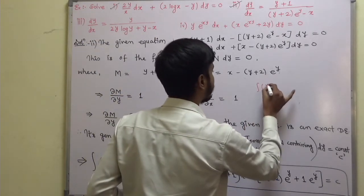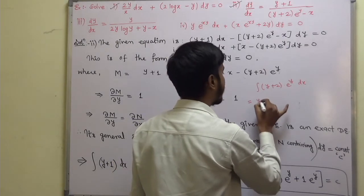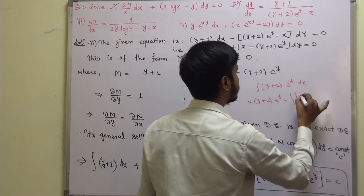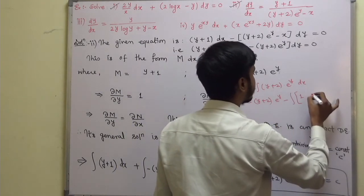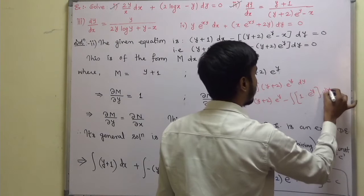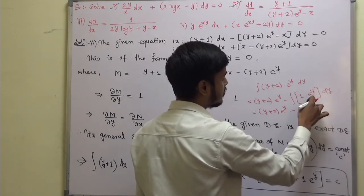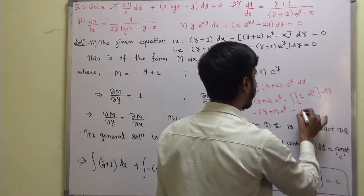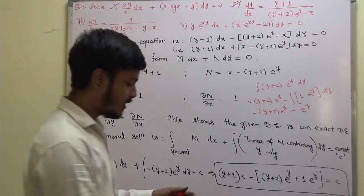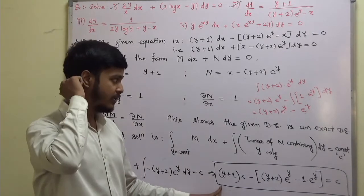To solve ∫(y + 2)eʸ dy, applying the LIATE rule: (y + 2)·eʸ minus ∫1·eʸ dy = (y + 2)eʸ − eʸ. There should be a minus sign outside, giving −[(y + 2)eʸ − eʸ]. Combined with (y + 1)x, this gives the complete solution to the second problem.